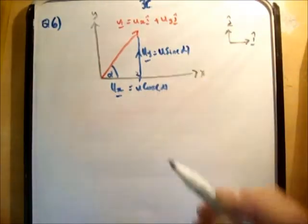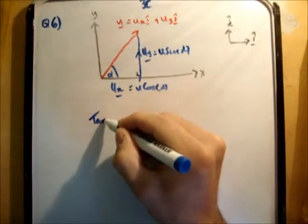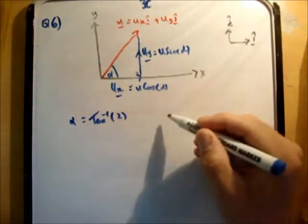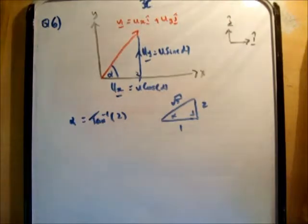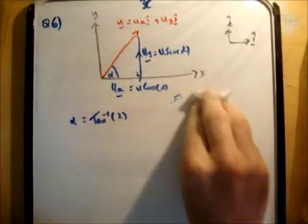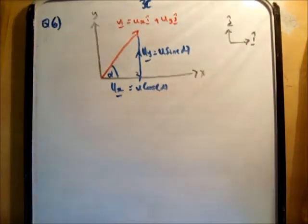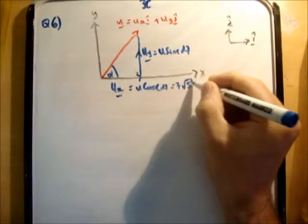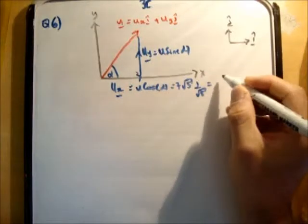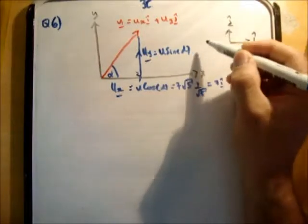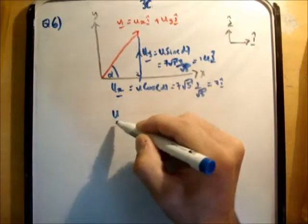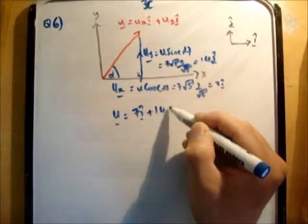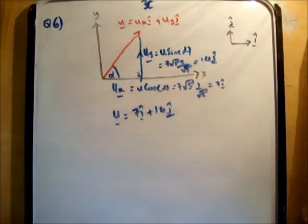We're given that tan inverse 2 equals alpha. Sketching that: tan is opposite over adjacent, so 2 over 1, giving a hypotenuse of root 5. Using SOHCAHTOA: sine alpha is 2 over root 5 and cosine alpha is 1 over root 5. With u equal to 7 root 5, we get u sub x equals 7 root 5 times 1 over root 5 equals 7 i hat, and u sub y equals 7 root 5 times 2 over root 5 equals 14 j hat. Therefore u equals 7 i hat plus 14 j hat.